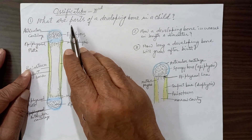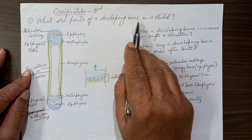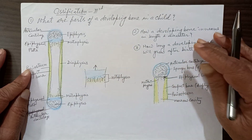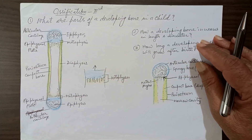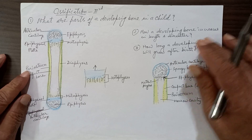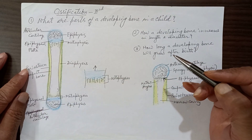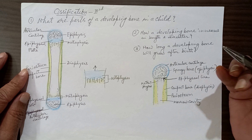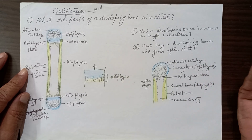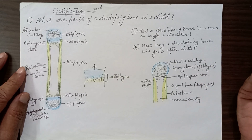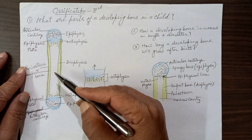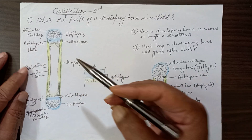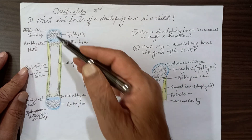Let us see what are the parts of a developing bone in a child — a growing bone — and what are its parts after birth, say for example somewhere between the third and the 16th year of age.